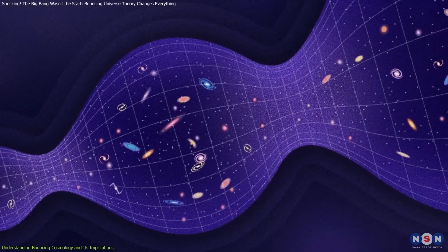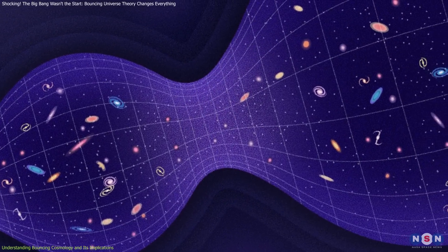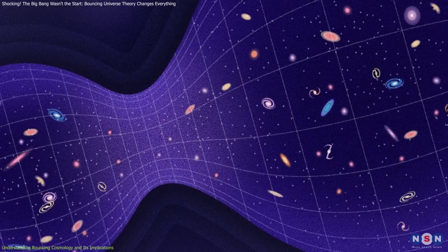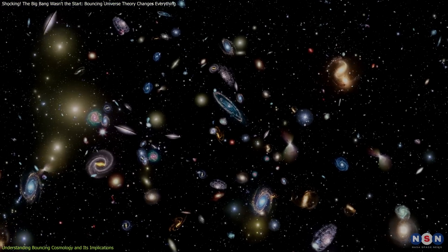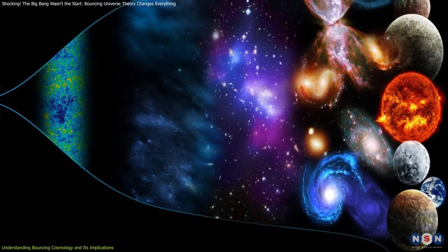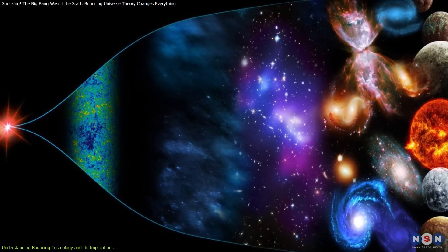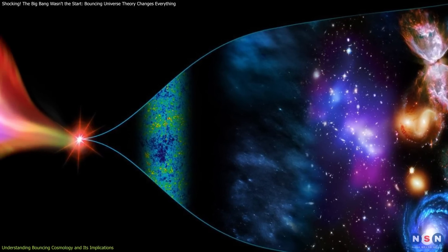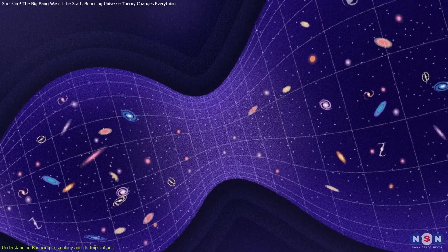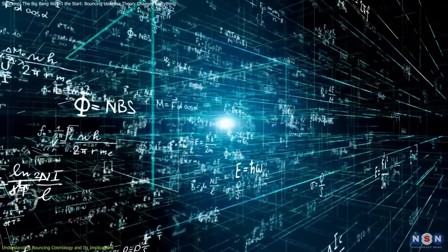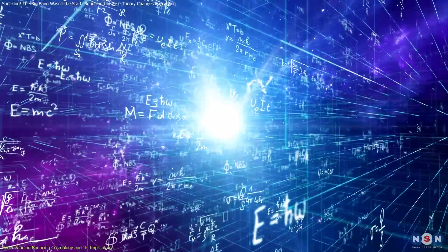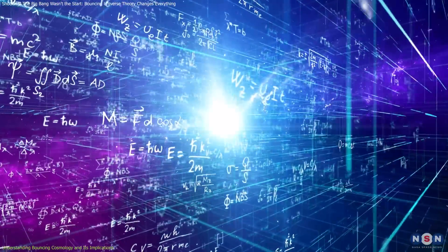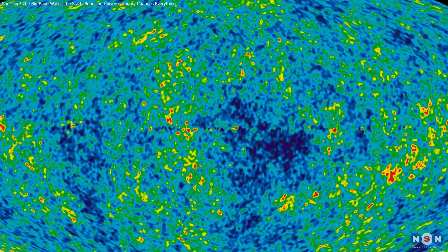This cyclical model suggests that each cycle of contraction and expansion could influence the next, pointing to a more interconnected universe across time. It implies that the seeds of galaxies, stars, and planets we observe today could have been laid down in a prior phase of the universe, shaping its evolution across successive cycles. Mathematical calculations and simulations support this model by predicting specific patterns in the distribution of cosmic structures, such as galaxies and the cosmic microwave background.